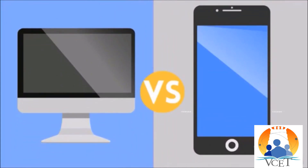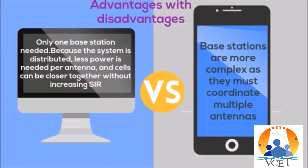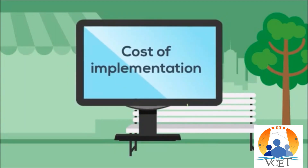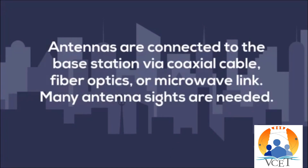Advantages and disadvantages: only one base station is needed, but base stations are more complex as they must coordinate multiple antennas. Antenna cells are connected to the base station via coaxial cable, fiber optics, or microwave link. Many antenna sites are needed, so the implementation cost of microcell zones is really high.